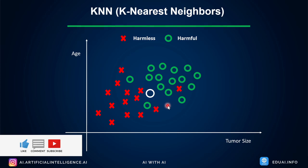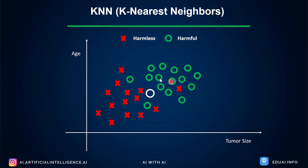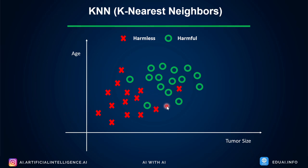What KNN does is simply look at who is nearest to the new point. It calculates the distance to its nearest data points. K is the number of data points we are going to consider. Let's say if I provide a value of K as four, it calculates the distance to four data points — the four nearest ones — and tries to assign the same class. If three out of four neighbors are harmless, the new point will also be considered harmless. This is how the super simple KNN algorithm works. All KNN needs to do is calculate the distance for a given number of neighbors — the value of K.